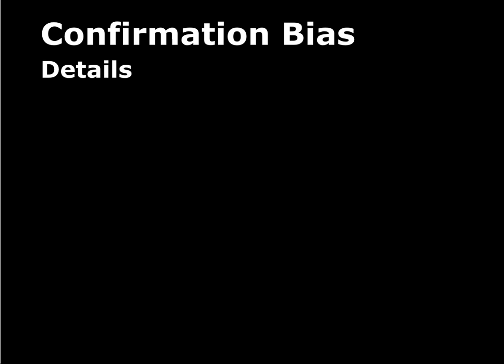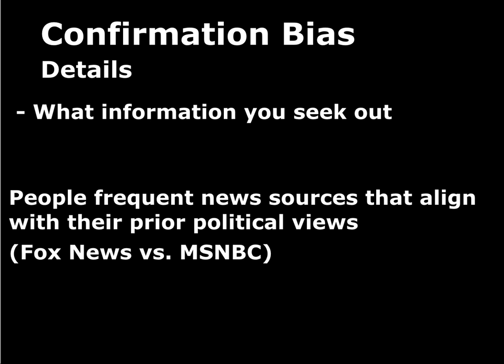Those are a couple of key studies. Now let's get into the details of how confirmation bias can manifest. One way is in terms of what information people seek. You have a set of beliefs or you're trying to make a decision and want to stay informed, but information collection is not 100% passive — people have choices about the sources they consult. For instance, people will frequent news sources that align with their prior political views: conservatives tend to watch Fox News, liberals tend to watch MSNBC.